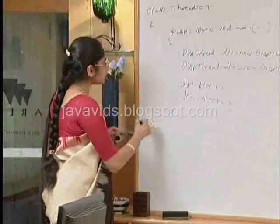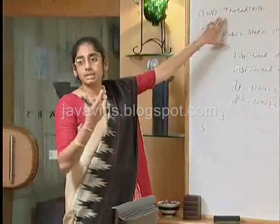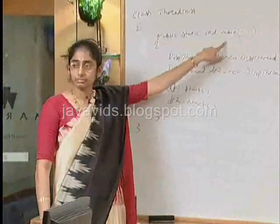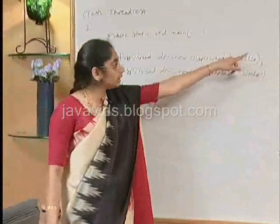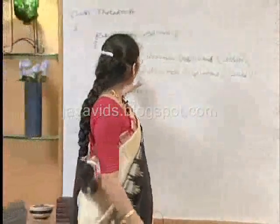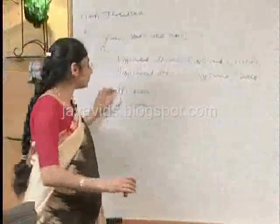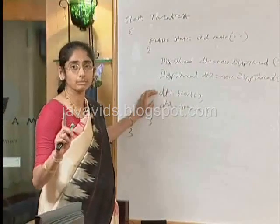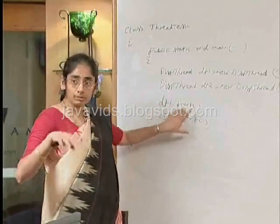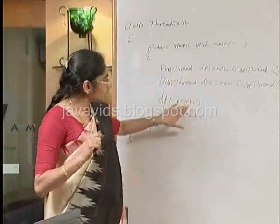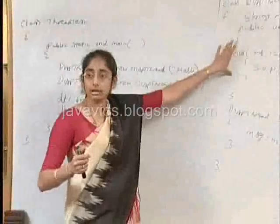Now let's see how the execution happens. When I say Java ThreadTest, the main thread (system thread) executes the main function and creates an instance of the DispThread class. When it does so, it executes the constructor and comes back. Again, it creates the next instance, executes the constructor, and comes back. Till now we still have a single thread — the system thread. Now we call dt1.start(). The start gets called within the main thread, which creates a separate path of execution for dt1. In that separate path of execution, the run method is called for dt1.